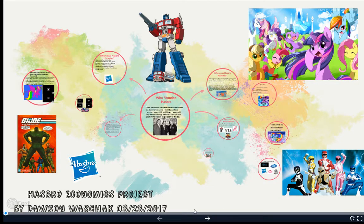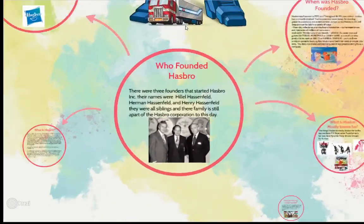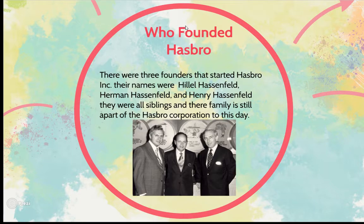You're gonna want to put your name at the very bottom after your title — I put 'by Dawson Walshack 03-23-17' — because they will take off points if you just put '3-23-17,' which is very bizarre. You can see I put Optimus because Transformers was a part of Hasbro, Power Rangers was part of Hasbro, GI Joe was part of Hasbro, and a bunch of other things were part of Hasbro. If I hit space I go to the next slide.